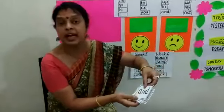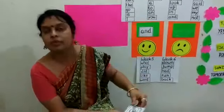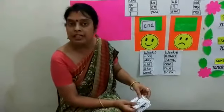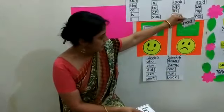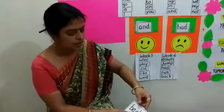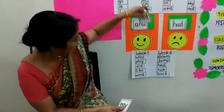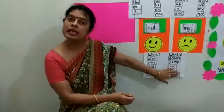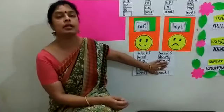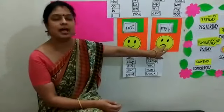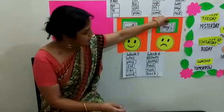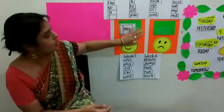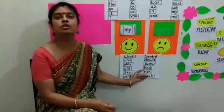If the child is able to read a word, it goes in the smiley face pocket. If he or she is not able to read it, it goes in the sad face pocket. The next day you can encourage the child to read the words from the sad face pocket again, and after reading, those flash cards go to the smiley face pocket. This is the way we encourage the child to read sight words.